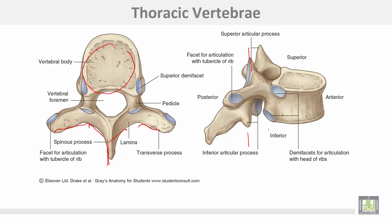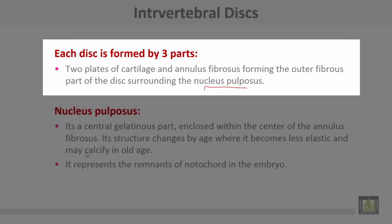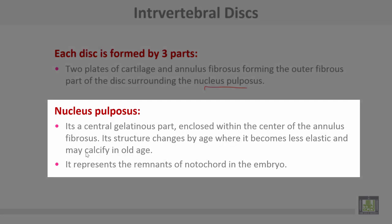The thoracic vertebra has a body, transverse processes, and laminae united to form the spine, along with superior and inferior articular processes and a costal facet. Intervertebral discs each consist of three parts: two cartilage plates and the annulus fibrosus forming the outer fibrous part, which surrounds the nucleus pulposus — a central gelatinous part. The nucleus pulposus becomes less elastic with age and may calcify, and it represents the remnants of the notochord in the embryo.